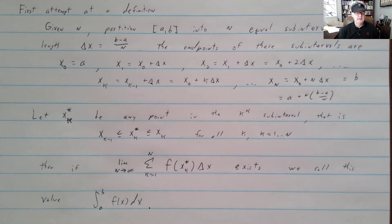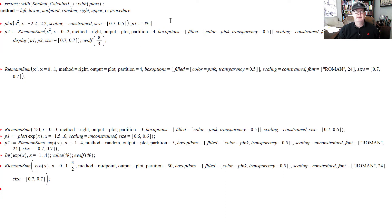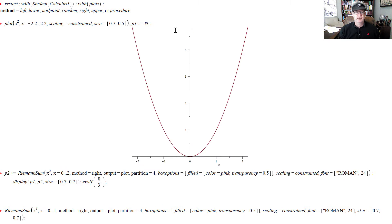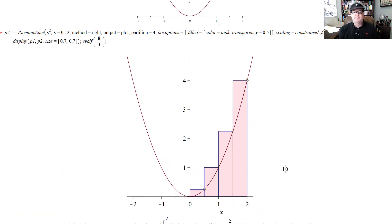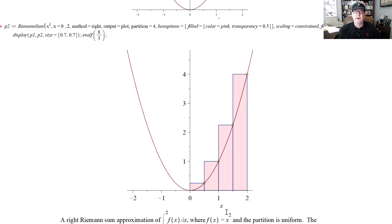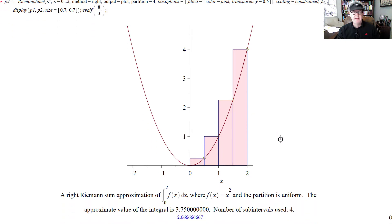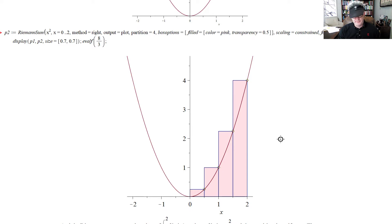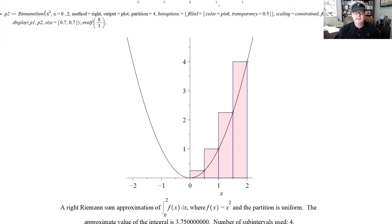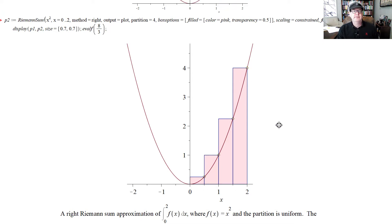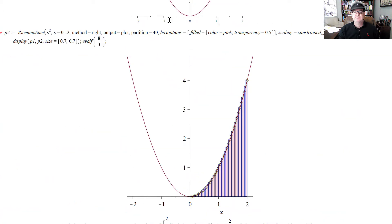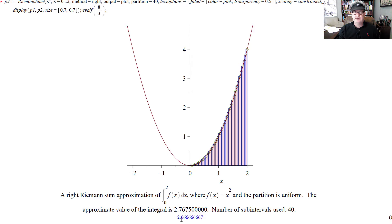Let's give a quick look at some examples, starting with x². Here's the graph, and here's a Riemann sum with 4 rectangles — this happens to be the right-hand sum. From the Fundamental Theorem of Calculus we get x³/3 from 0 to 2, which gives 8/3, about 2.6667. Right now we're well above — you can tell we're overestimating the area under the curve.